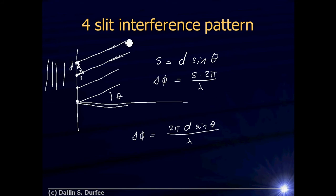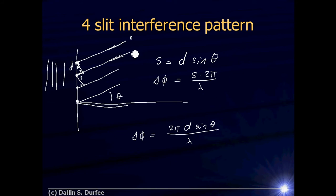That's the phase shift between adjacent slits. I could also draw a triangle between any adjacent pair and get the same delta phi. So relative to the top beam, the contributions have phases of zero, delta phi, two times delta phi, and three times delta phi.